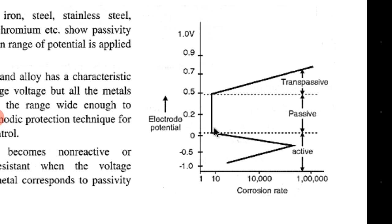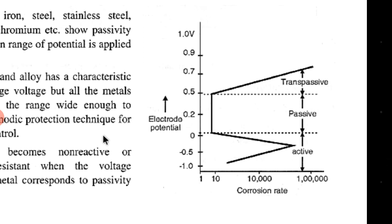Every metal will have this passive range. If you apply that particular potential to the metal, it will stop reacting to the external environment — external conditions don't affect its nature, corrosion doesn't start, and it can be protected for a longer time.